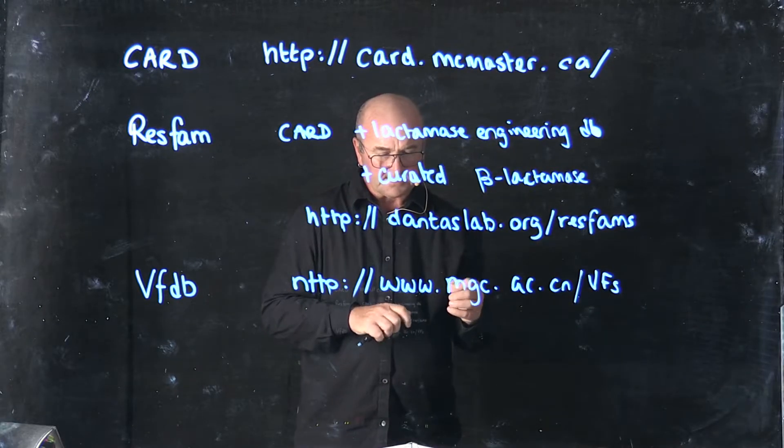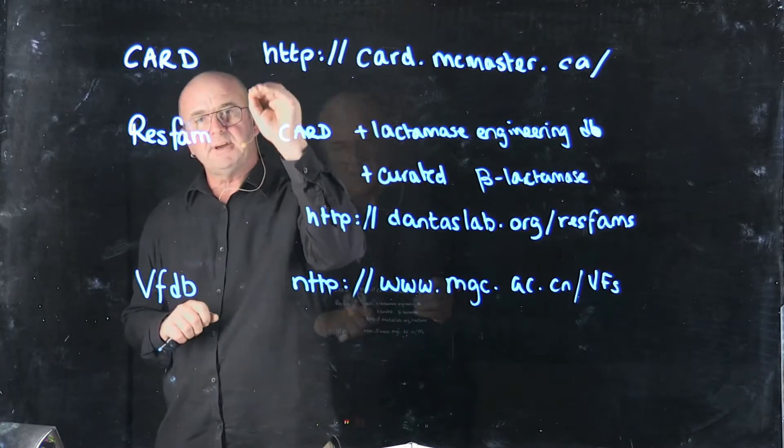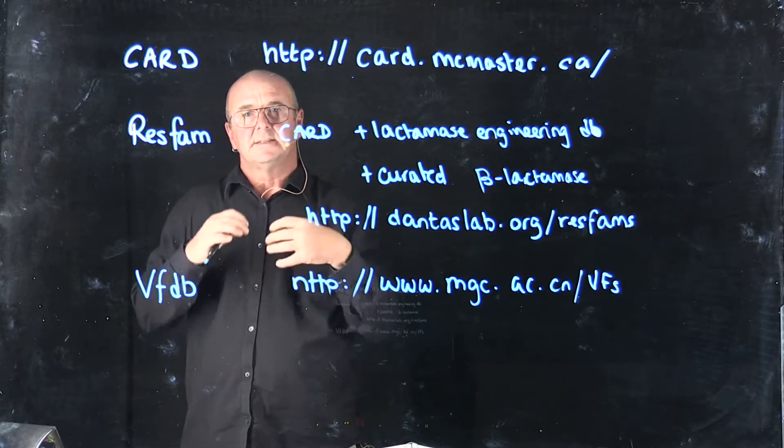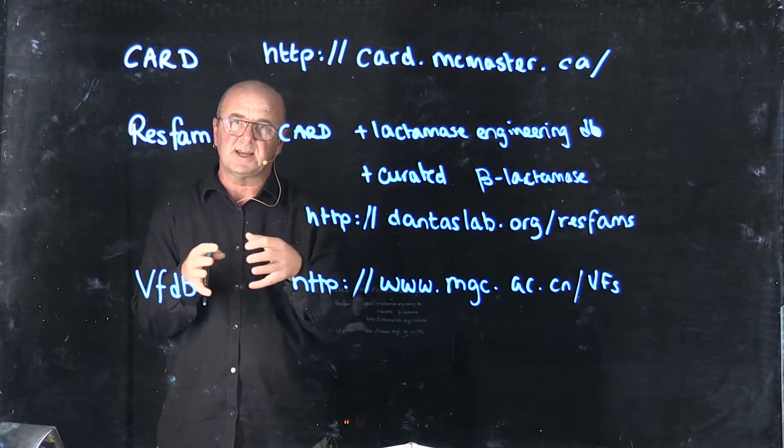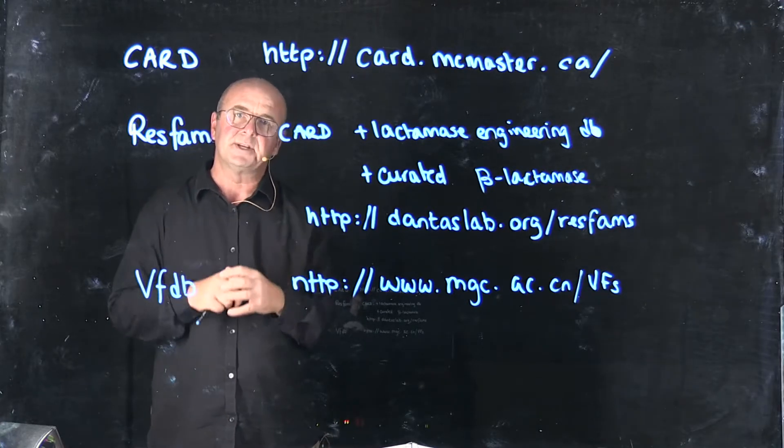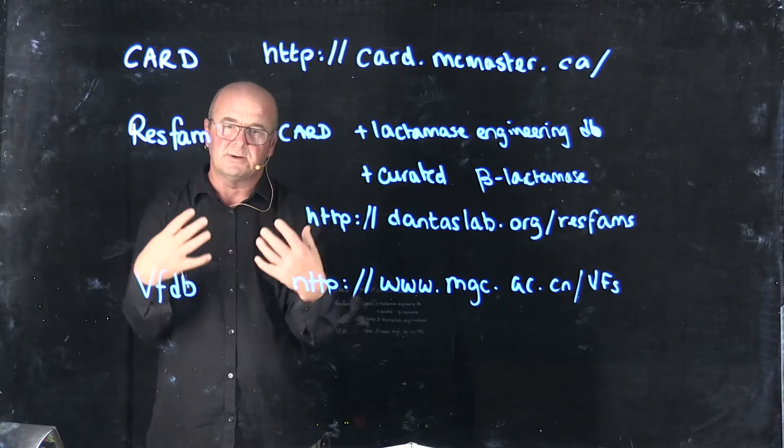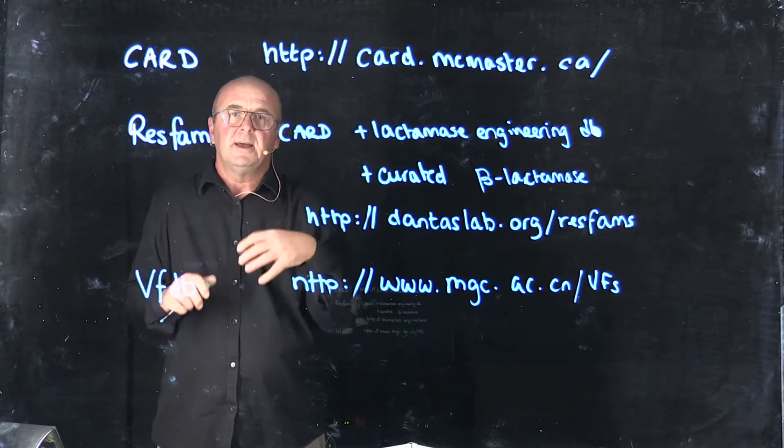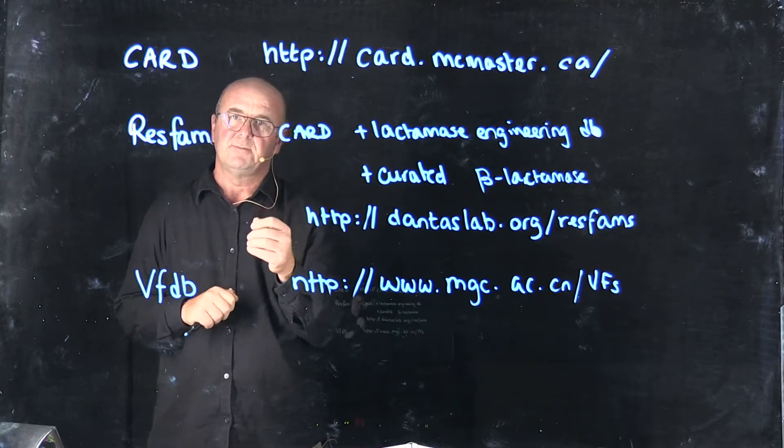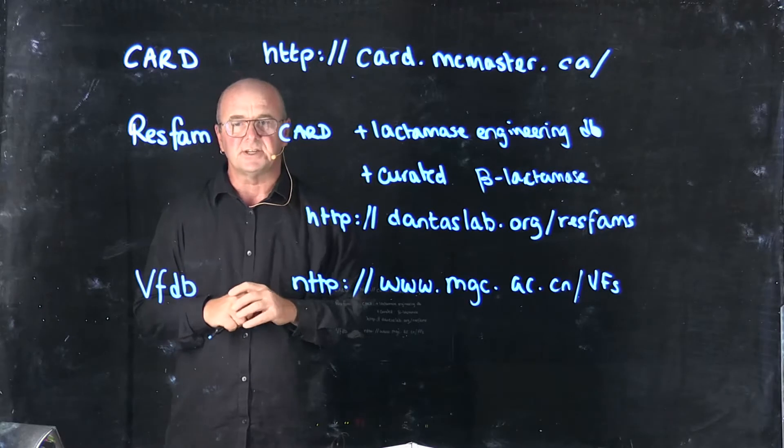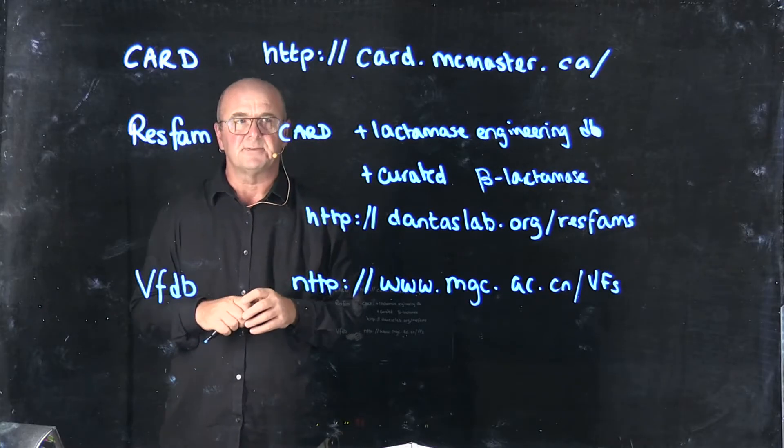Each of these databases has different, obviously, protein sequences. But they have mechanisms where you can take a genome or some proteins from your annotated genome or some components from your genome and compare them to their databases. And they'll identify whether you have antibiotic resistance genes in your genome, for example.